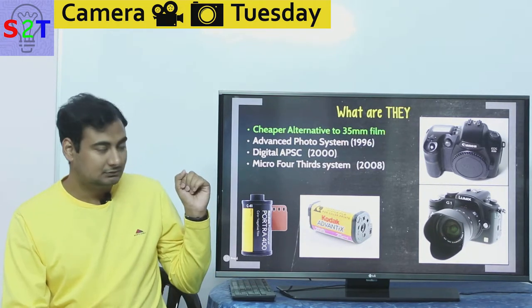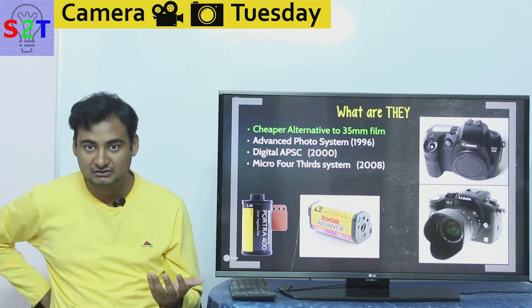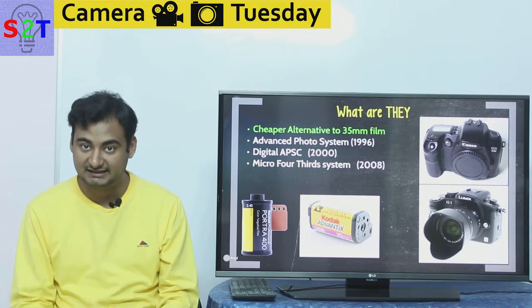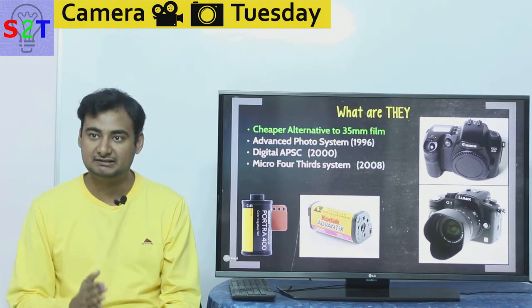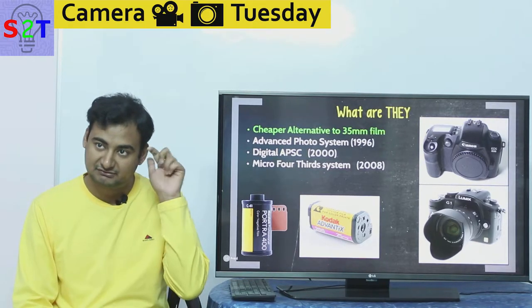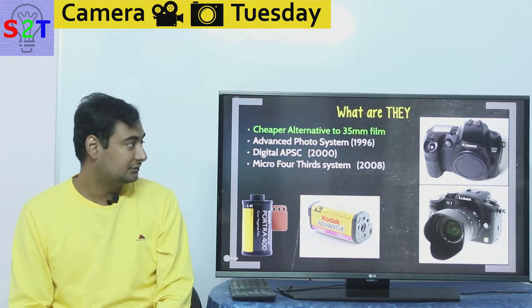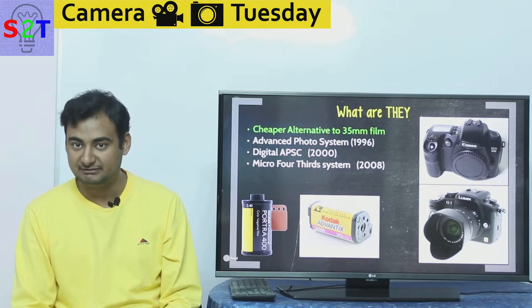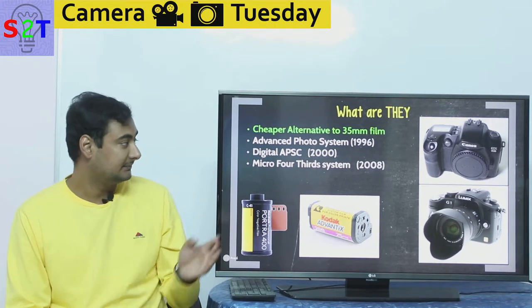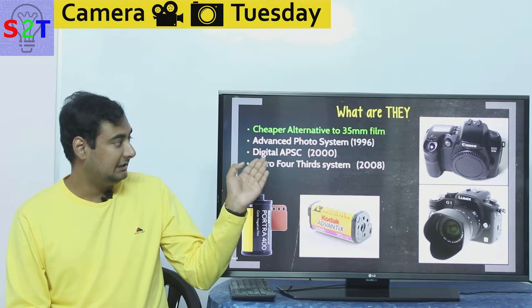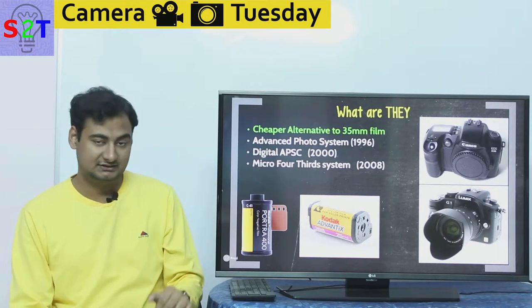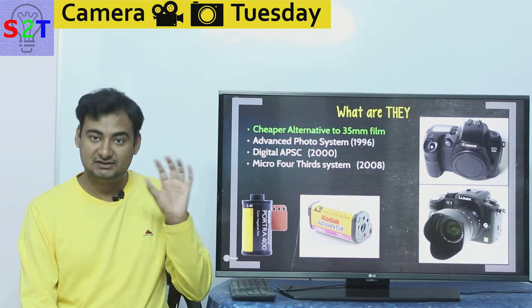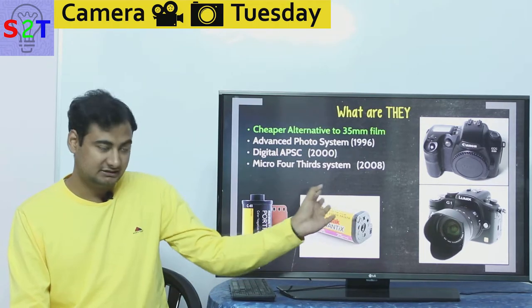Full frame was very successful, but a consequence of that system was it was expensive — even in the film days, 35mm film cameras were very expensive. So there was a need for a cheaper alternative, and that's where the APS-C system came in — basically a smaller film created in a smaller cartridge system.